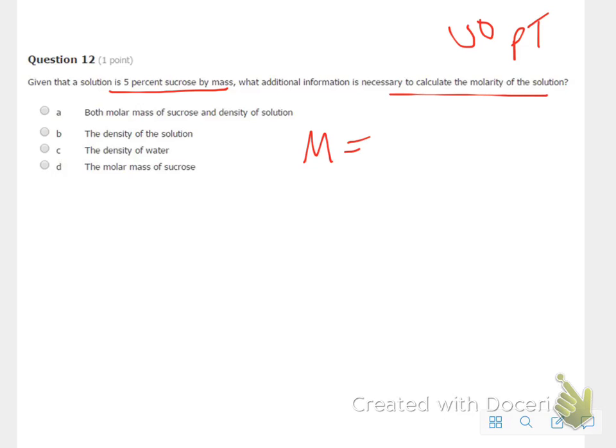Okay, so molarity is moles over liters. So I need to figure out the moles of sucrose, and in order to get the moles of sucrose, I'm going to need the molar mass, right? So I know I need the molar mass, so I can eliminate these two choices.